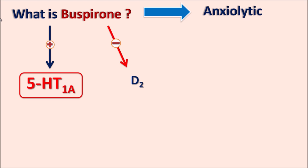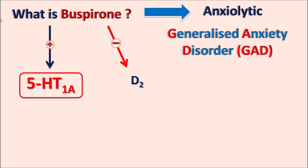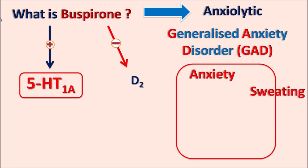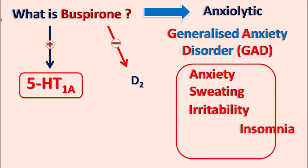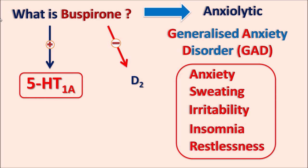Buspirone is particularly prescribed in conditions like generalized anxiety disorder (GAD), where anxiety is observed without any clear reason. Patients may present with symptoms such as anxiety, sweating, irritability, insomnia, and restlessness. When all these symptoms are observed for at least one month, buspirone can be prescribed as a second-line drug after the benzodiazepines.